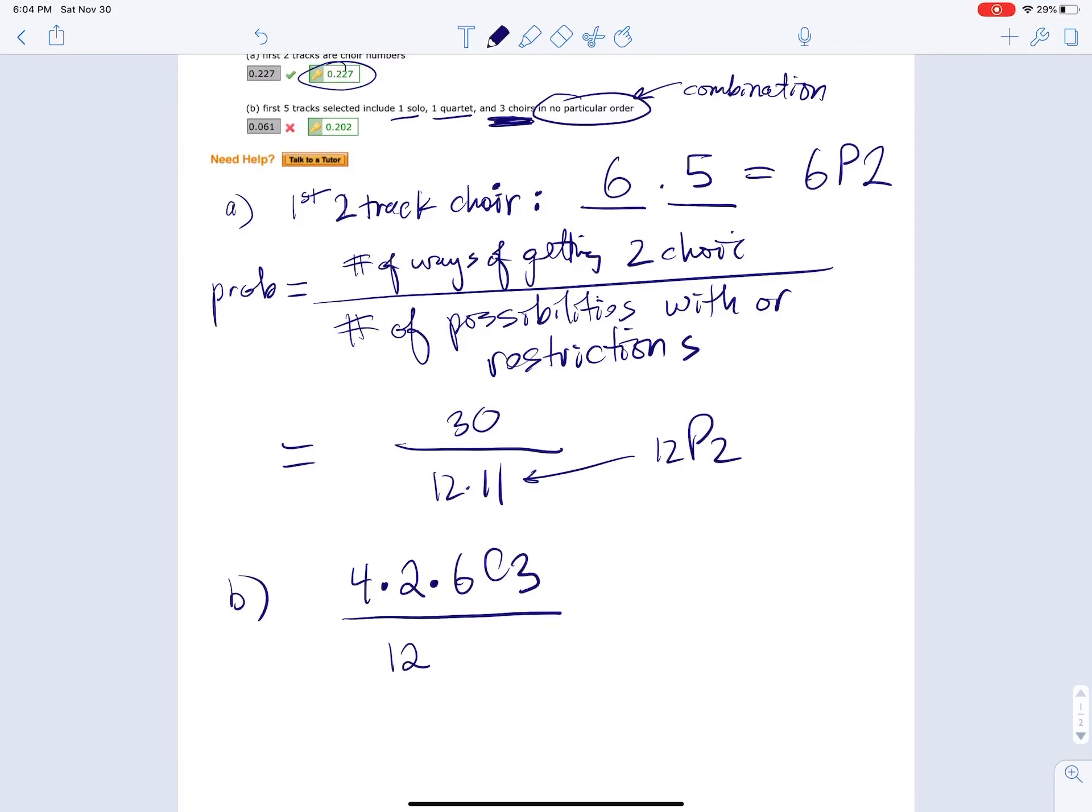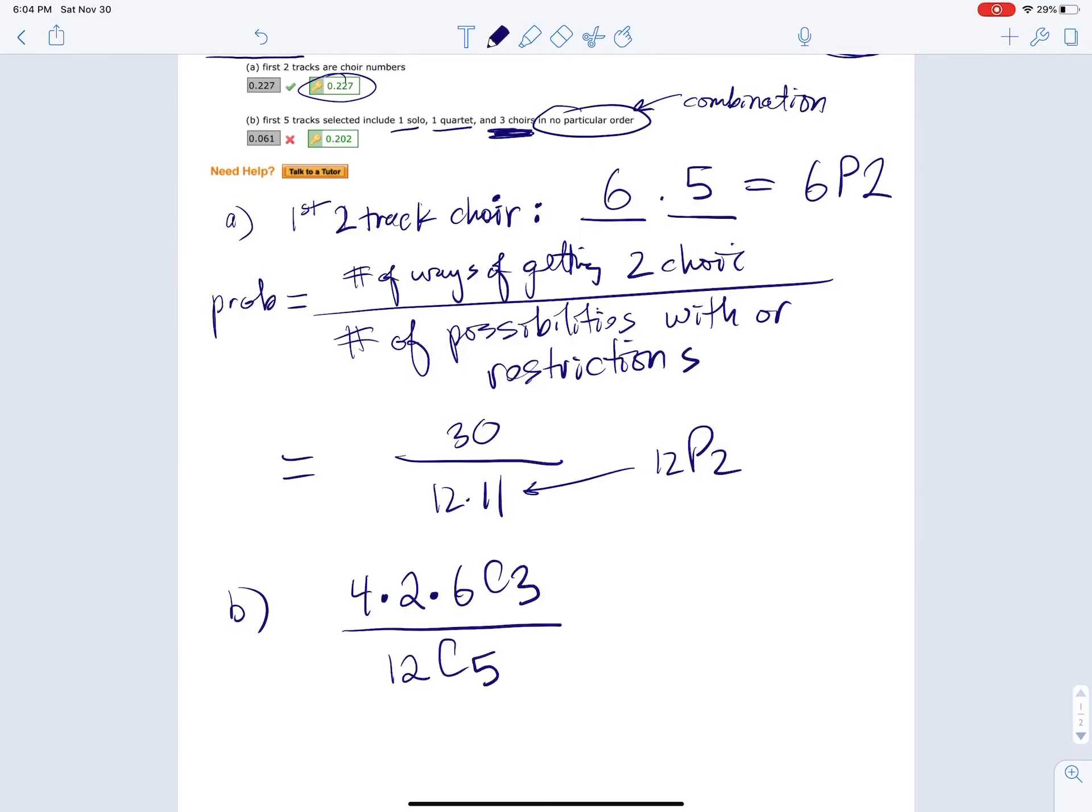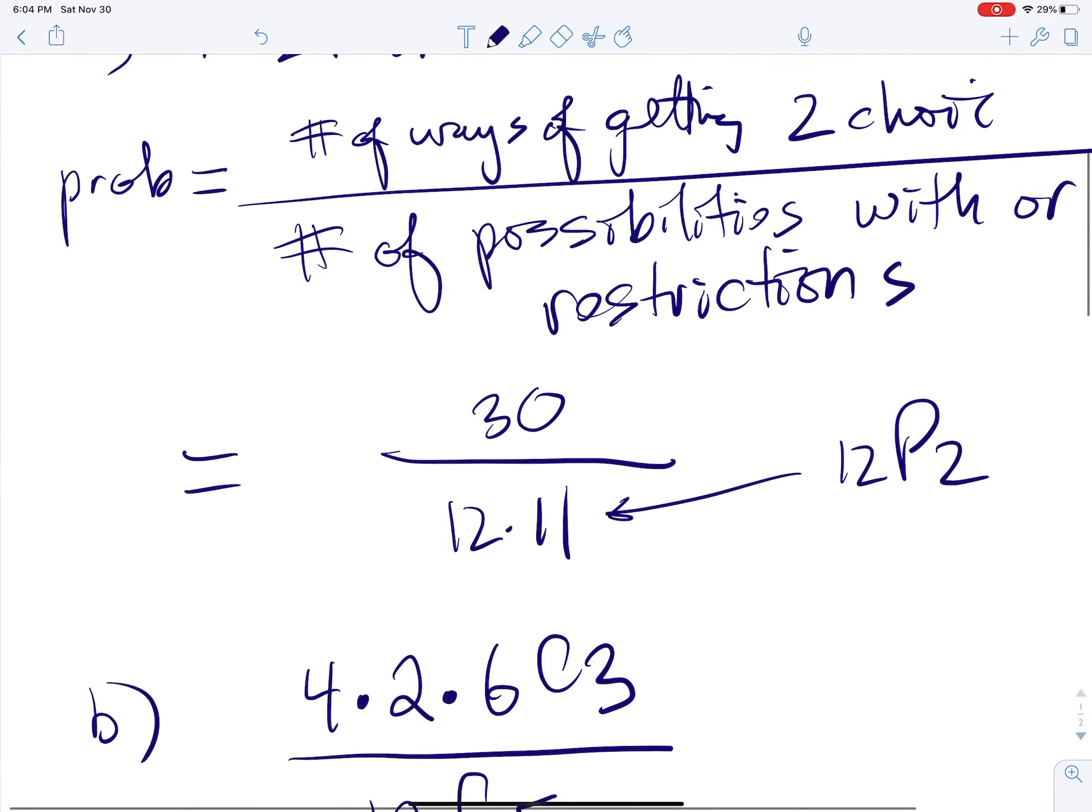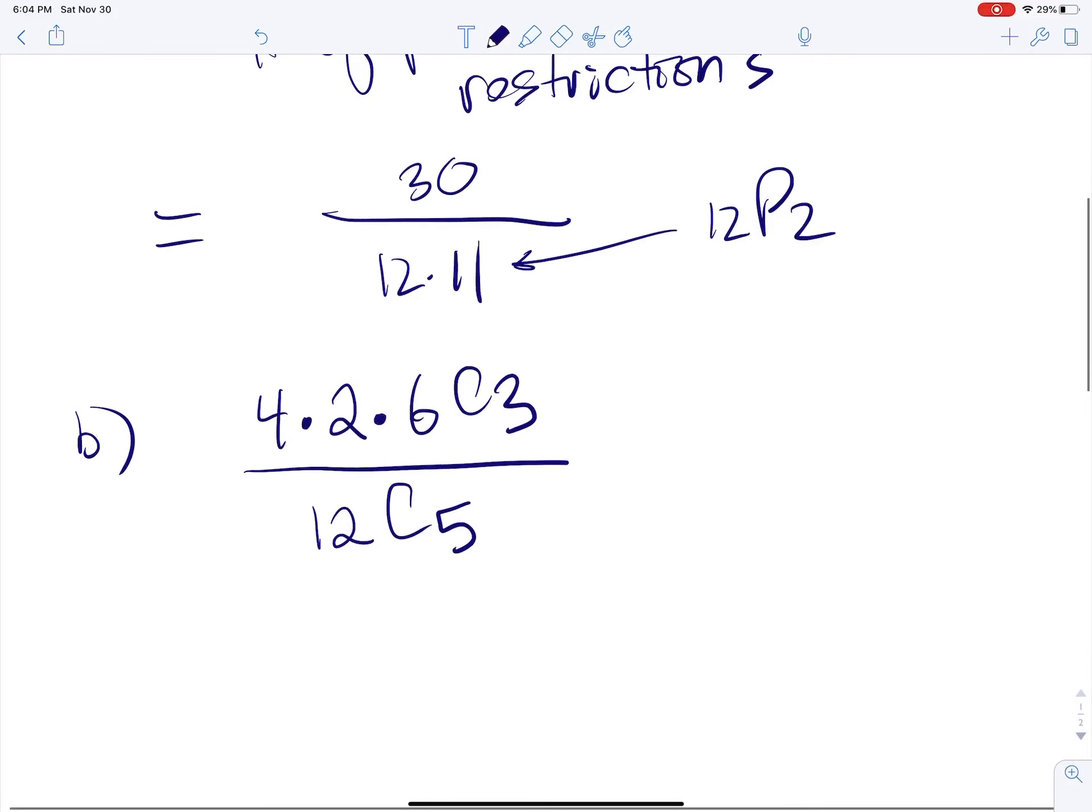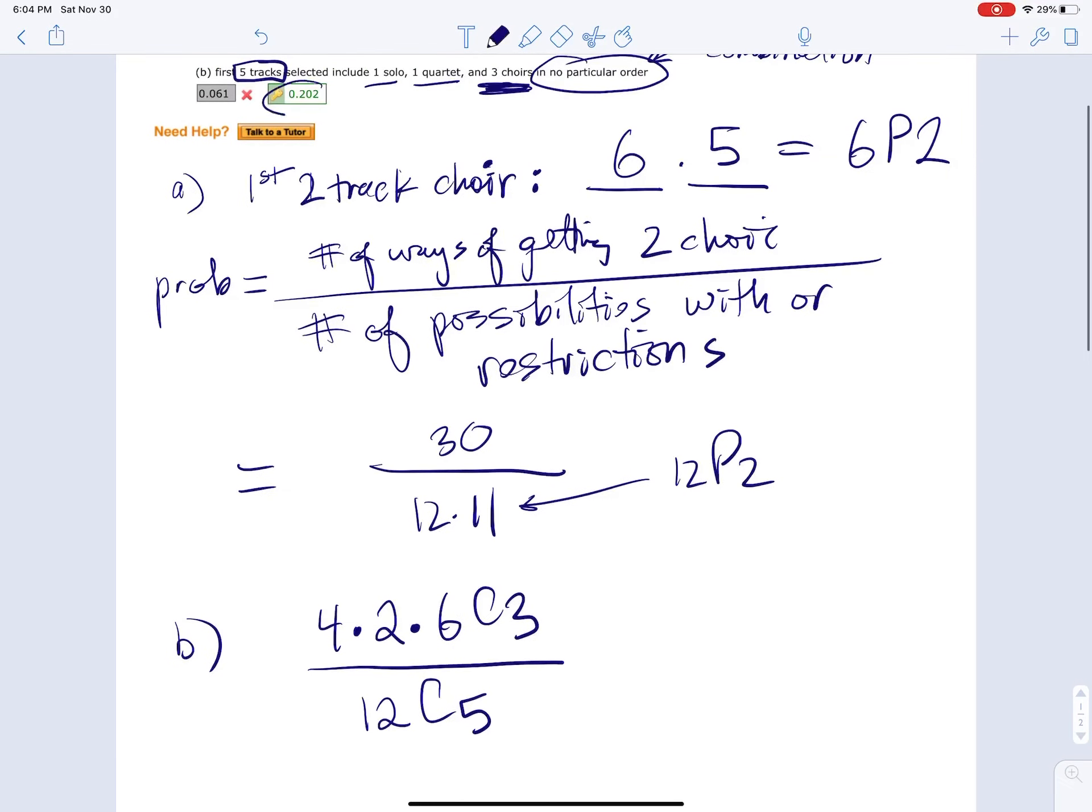Now for the denominator, it's going to be 12C5 because we are selecting five tracks. So that's it. If you plug all that in, you get the answer, which is 0.202. All right, that's it.